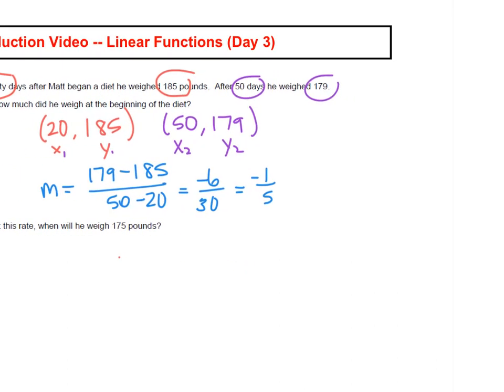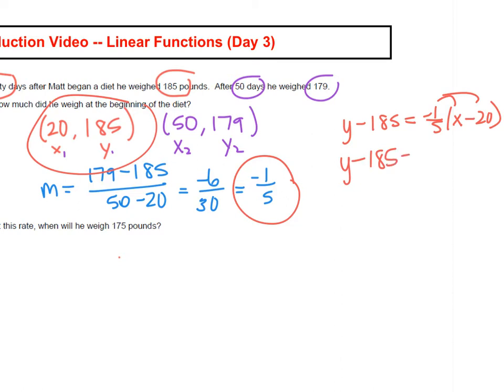Now we're going to take our slope, pair it with our ordered pair, and write an equation. Y minus Y1, which is 185, equals negative 1 fifth times X minus X1. Let's solve this for Y. So distribute that negative 1 fifth. Y minus 185 equals negative 1 fifth X. Negative 1 fifth times negative 20 is positive, and when you multiply that out, you get 4. Now let's add 185 to both sides. And our equation is Y equals negative 1 fifth X plus 189.